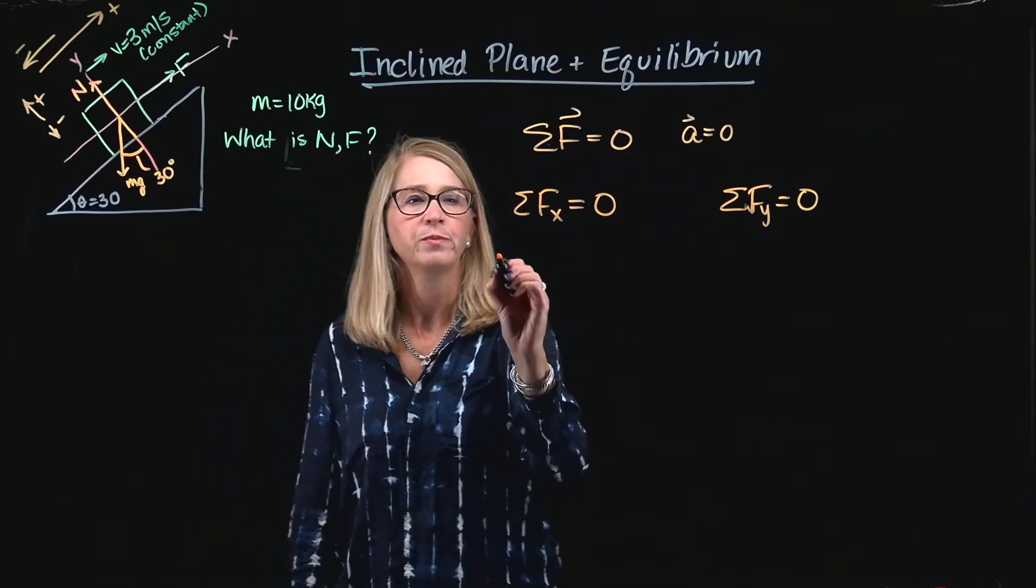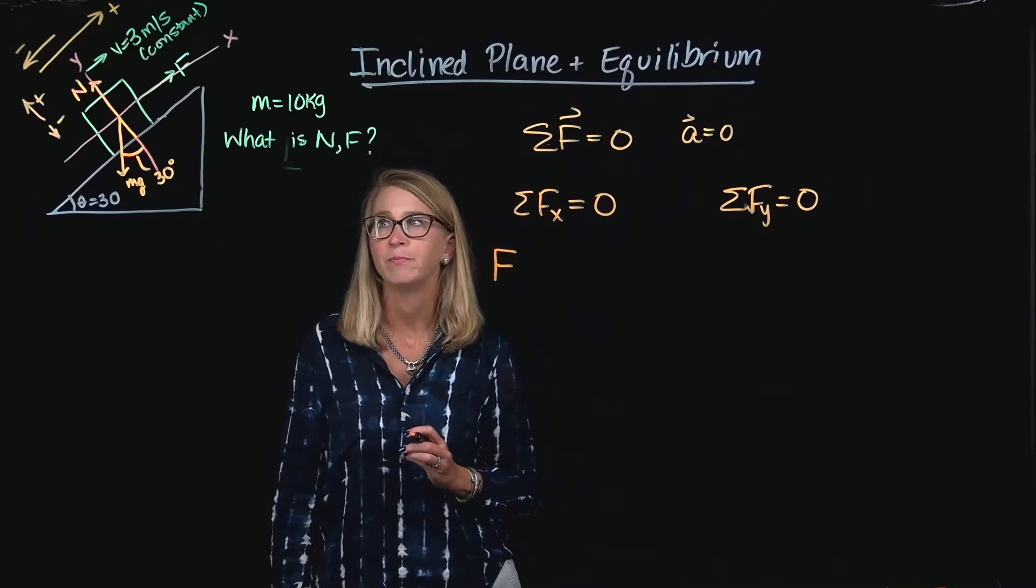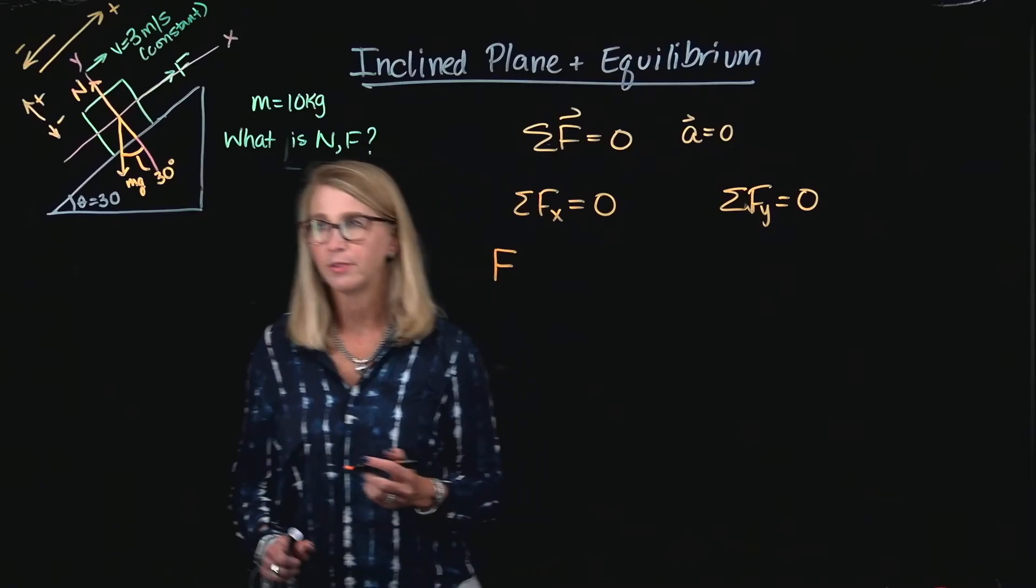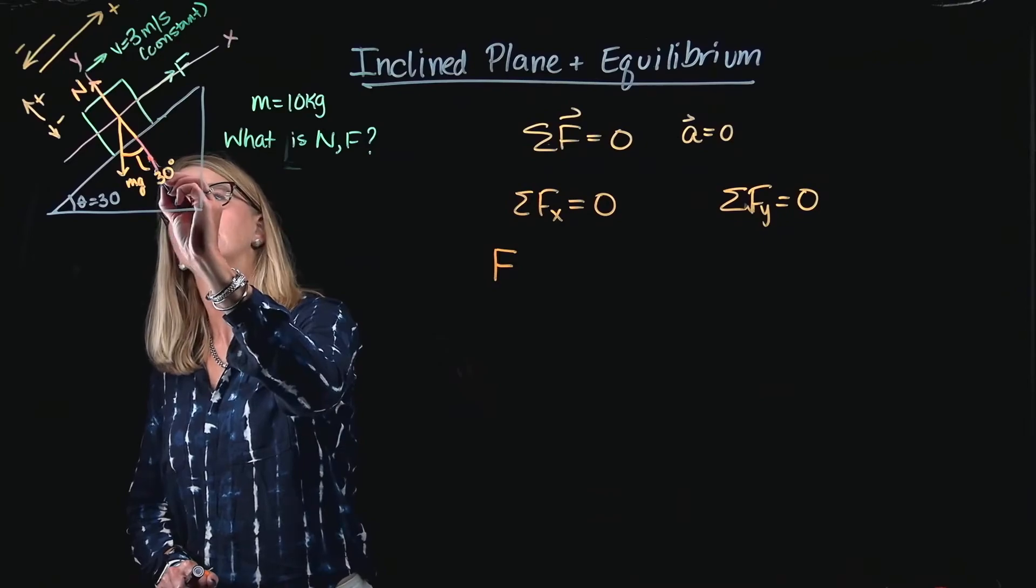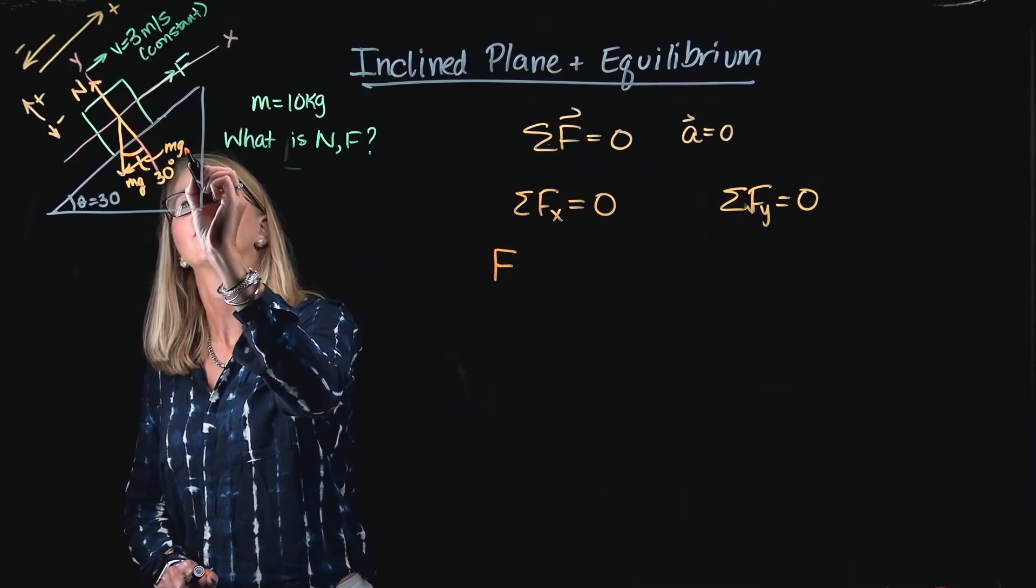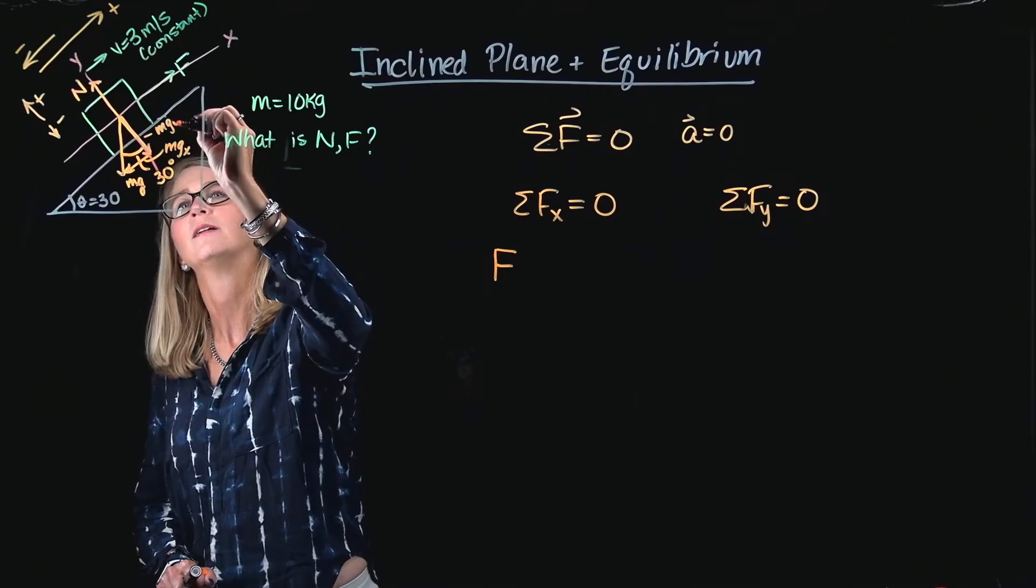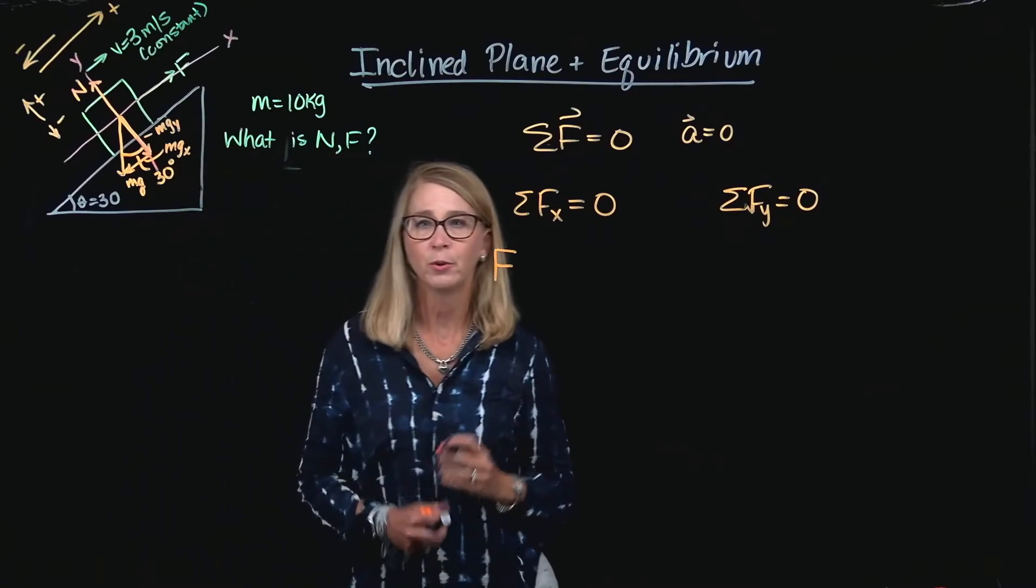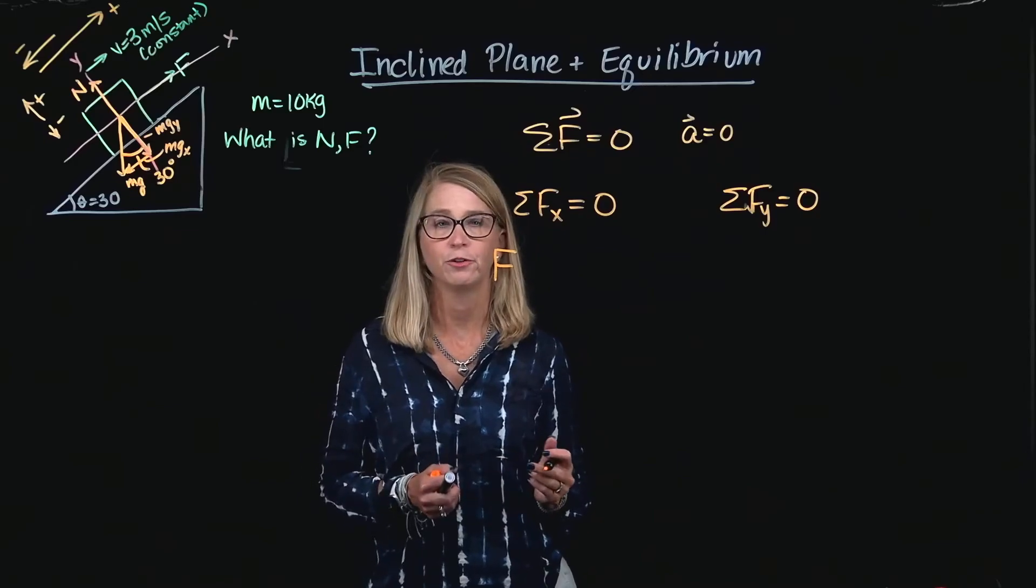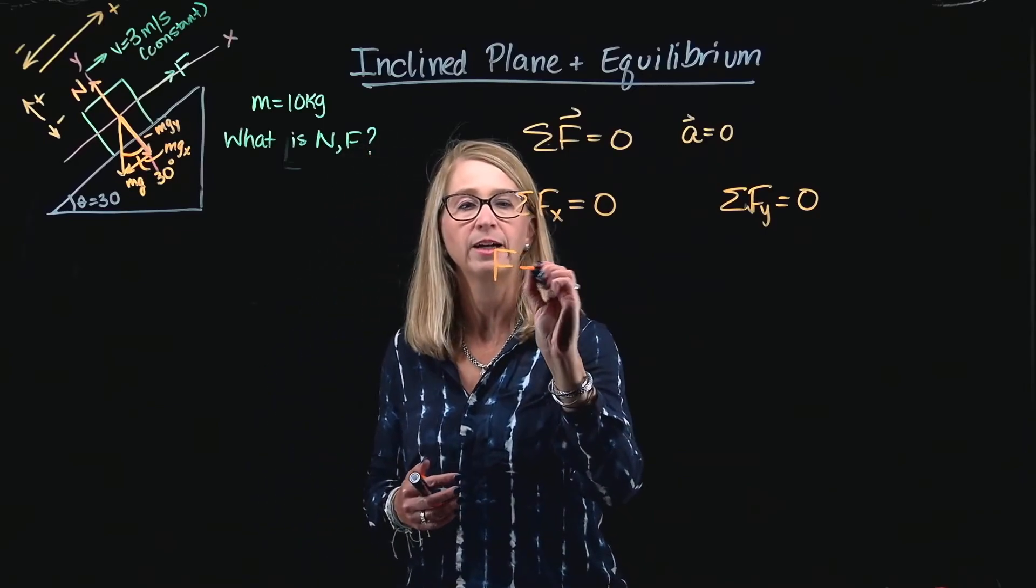So, in the x direction, I have the force, the applied force that's acting up the incline, and then I have the x component of the weight. Now, if I think about that, this little piece right here is mgx, and this little piece right here is mgy. So, mgx is actually opposite the angle theta, the 30 degree angle, so I need to use the sine to represent that x component.